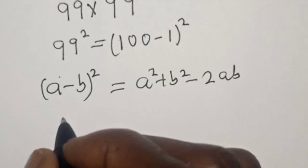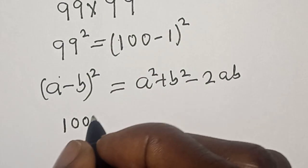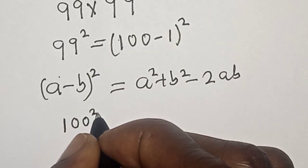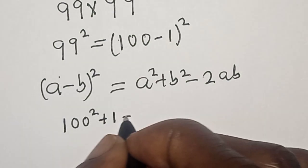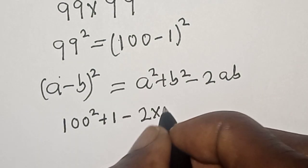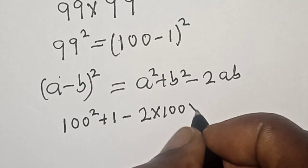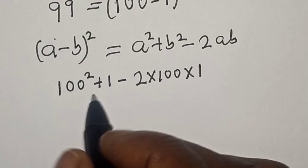We have 100² plus 1 minus 2 multiply by 100 multiply by 1. Now 100² is 10,000.